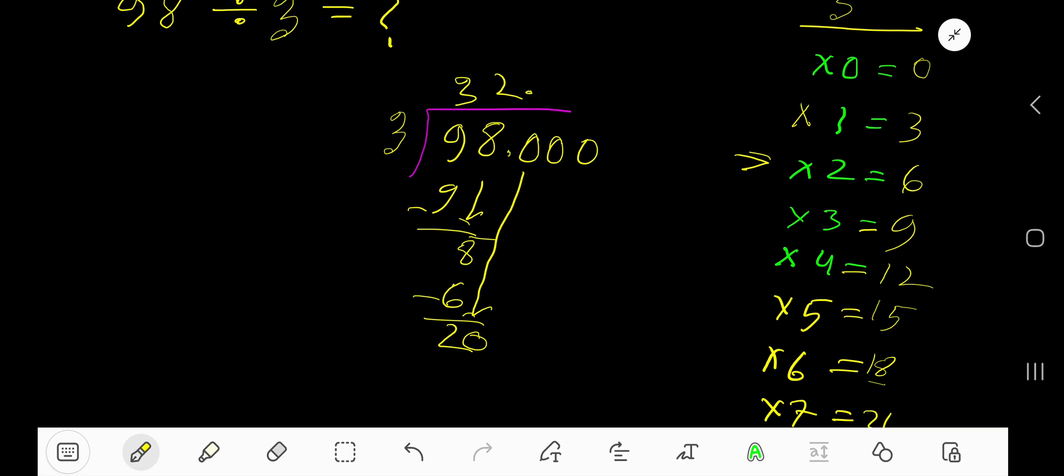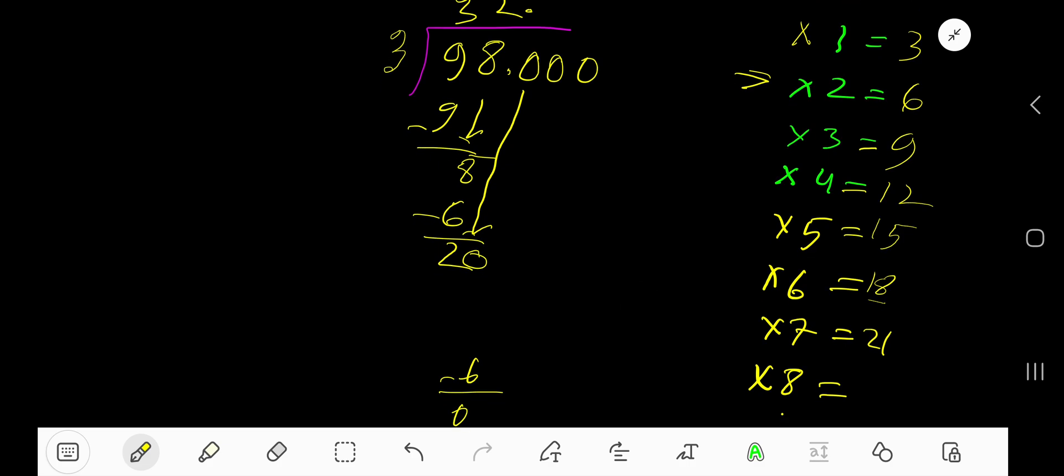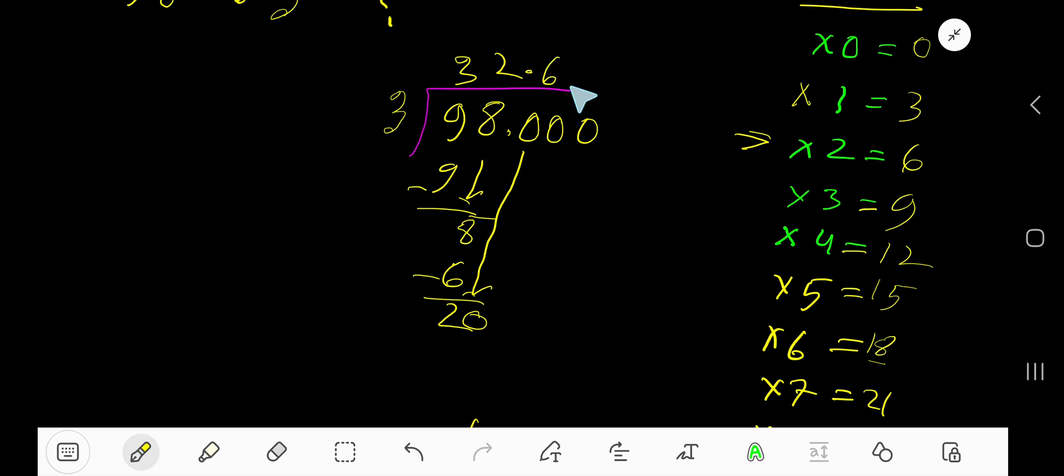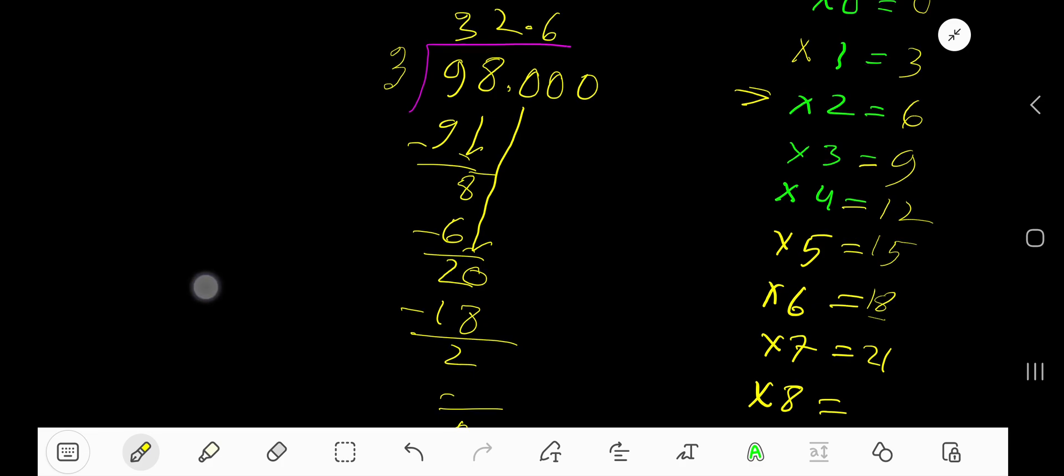3 goes into 20 how many times? 7 times is 21, which is greater, so 6 times. Write 6. 6 times 3 is 18, subtract to get 2. Again bring down this 0. 3 goes into 20 again, 6 times.